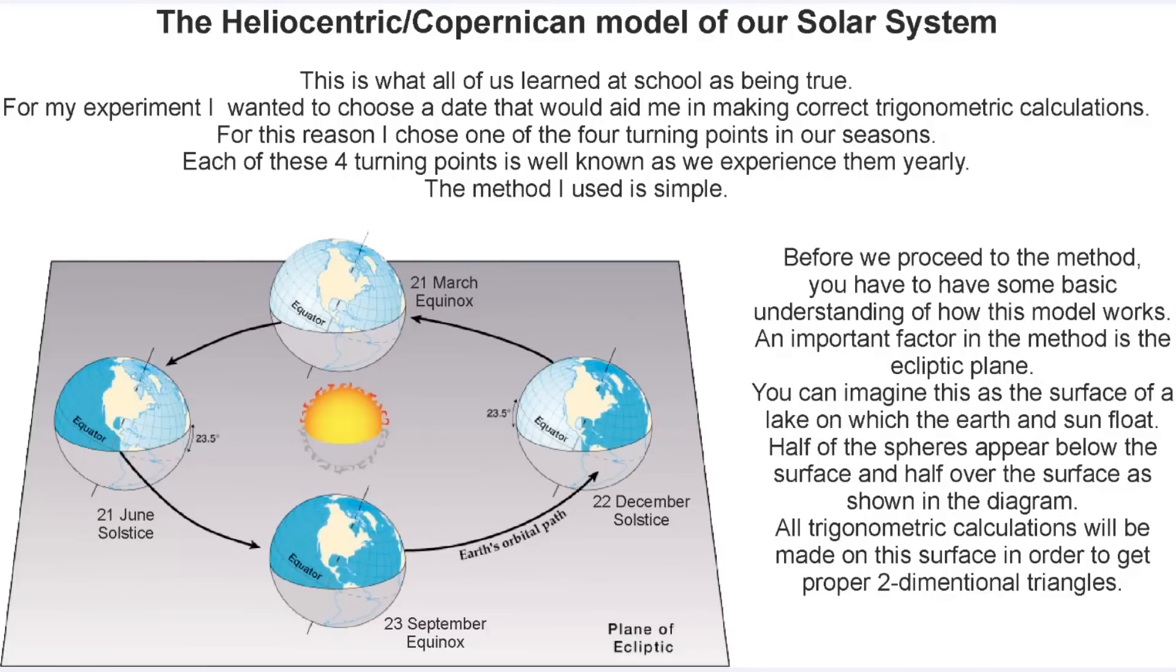This is the heliocentric Copernican model of our solar system, and this is what we've all learned at school as being the truth. For my experiment, I wanted to choose a date that would aid me in making correct trigonometric calculations. For this reason, I chose one of the four turning points in our seasons. Each of these four turning points is well known, as we experience them yearly. The method I used is simple.